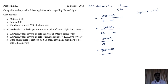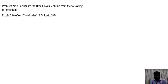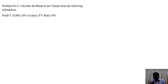This question was asked in the year 2014 for 12 marks. Let us work out one more problem — problem number 8. Calculate break-even volume from the following information: profit rupees 10,000, which is 20% of sales, and PV ratio is 50%. With only these two pieces of information, we need to calculate the break-even volume. The information is very less but it is very technical and interesting.